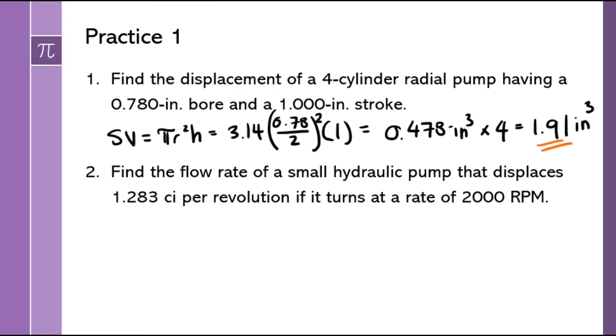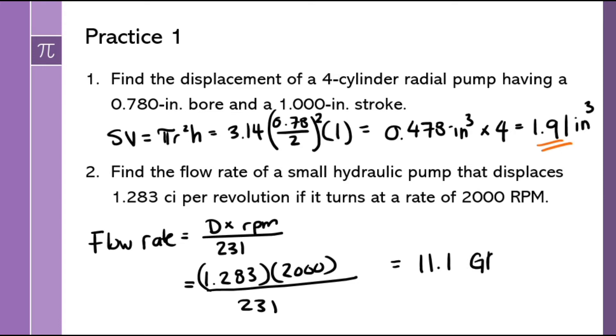Looking at number two, finding the flow rate. I know that flow rate is equal to displacement times the speed divided by 231 for a gallon conversion. And in this one, nothing too crazy either. The displacement's already given to me. RPM is 2,000. 231 is given. And then we're going to get about 11.1 gallons per minute.